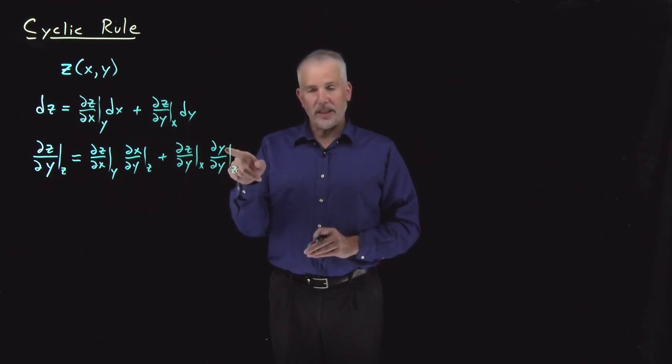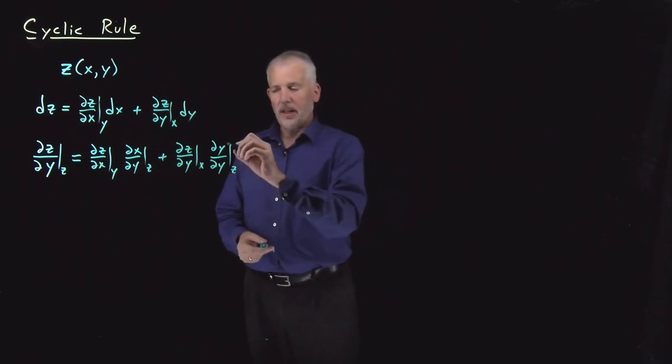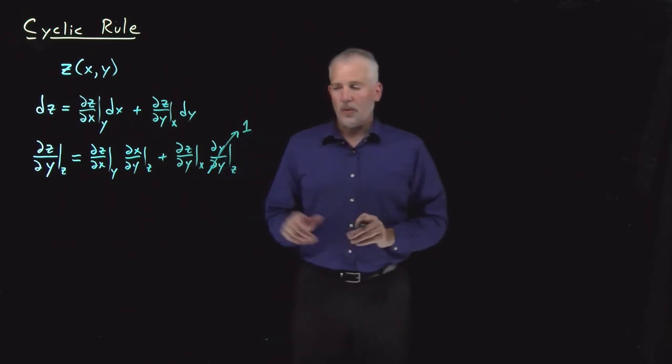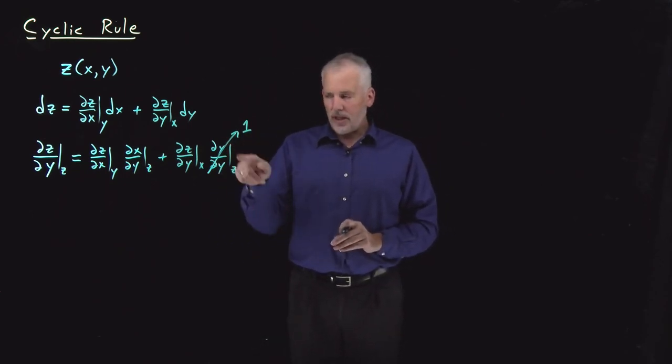Well, of course, y changes exactly as much as y changes. So the value of this derivative, it doesn't matter what we're holding constant, ∂y with respect to ∂y is just 1. When y changes, y changes the exact same amount. So that derivative is equal to 1.